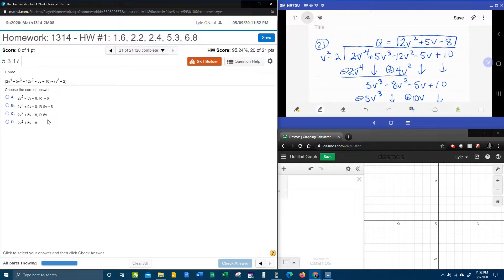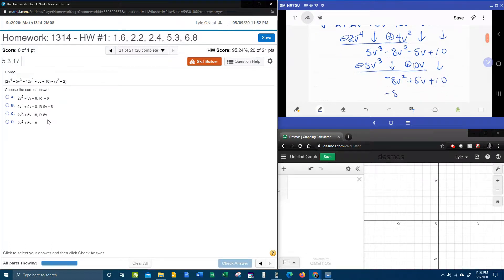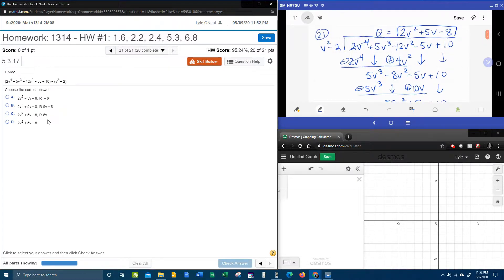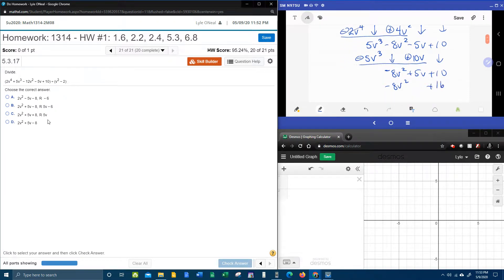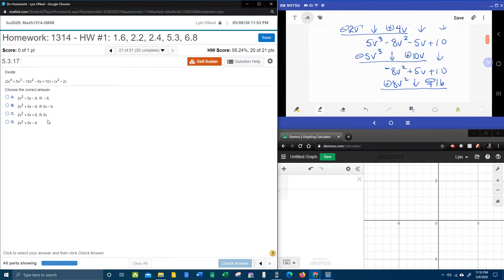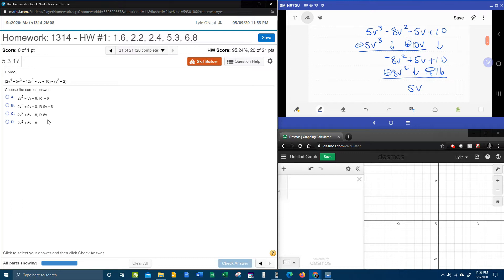Here we go. Negative 8 is going to distribute. Negative 8 times v squared makes a negative 8v squared. Remember I said that those should always match, and they do. And then negative 8 times negative 2, that is a plus 16. Draw the line. Change the signs. And then combine. So the 5v is going to fall through the hole. 10 minus 16 is negative 6. Look at this. We do get a remainder. So the answer is definitely not d. We do get a remainder. And it is 5v minus 6.